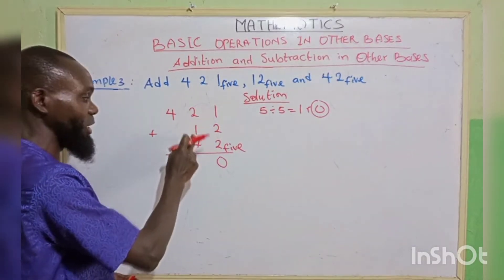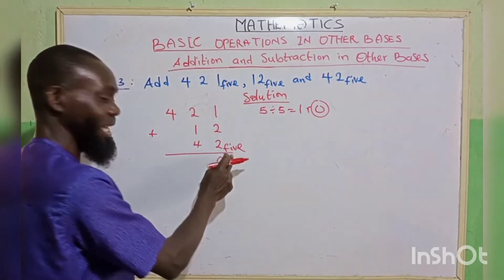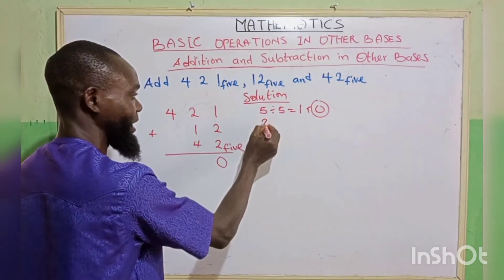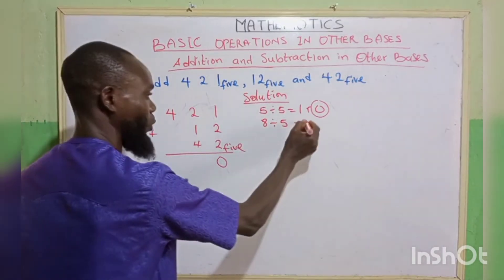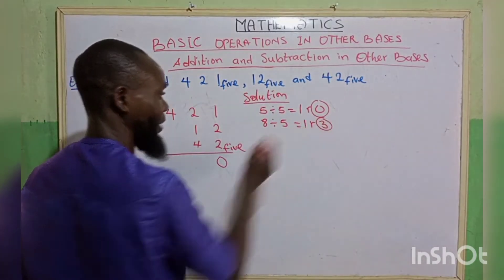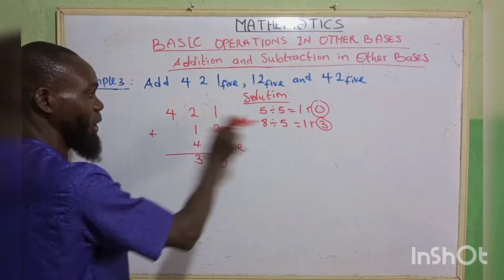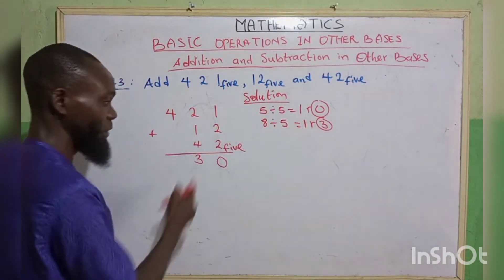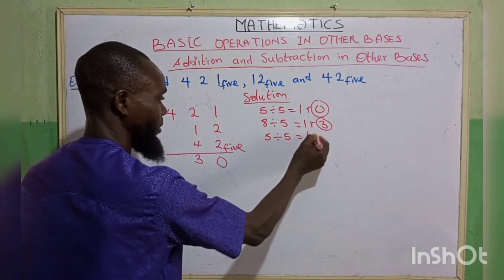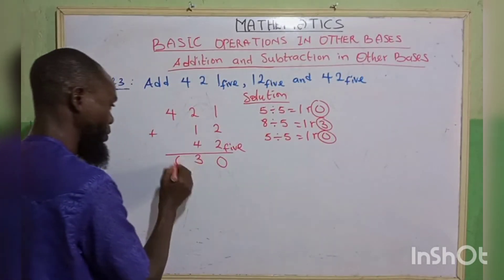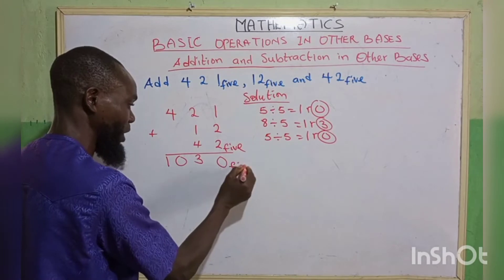Next column: 2 plus 1 plus 4 gives 7, plus the carried 1 gives 8. 8 is above 5. 8 divided by 5 gives 1, remainder 3. We write remainder 3 and carry 1. Then 4 plus the carried 1 gives 5. 5 divided by 5 gives 1, remainder 0. We write remainder 0 and carry 1. There are no more numbers, so we write 1 in front. The answer is 1030 base 5.